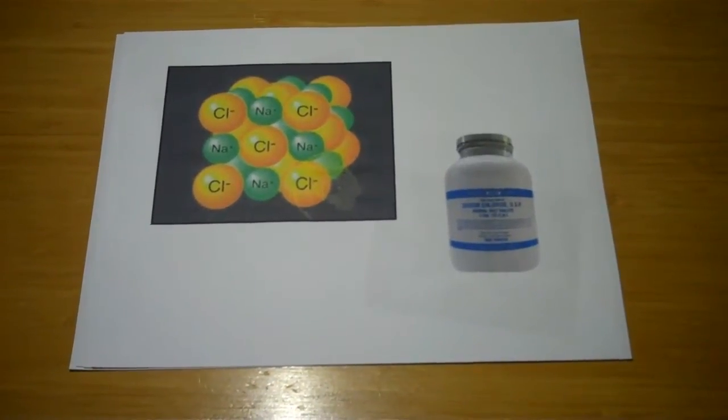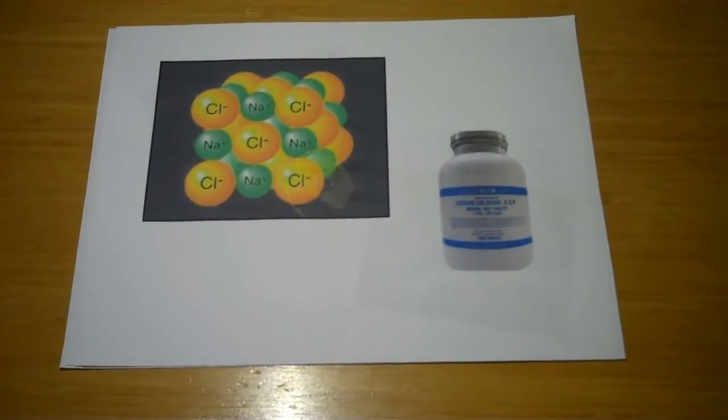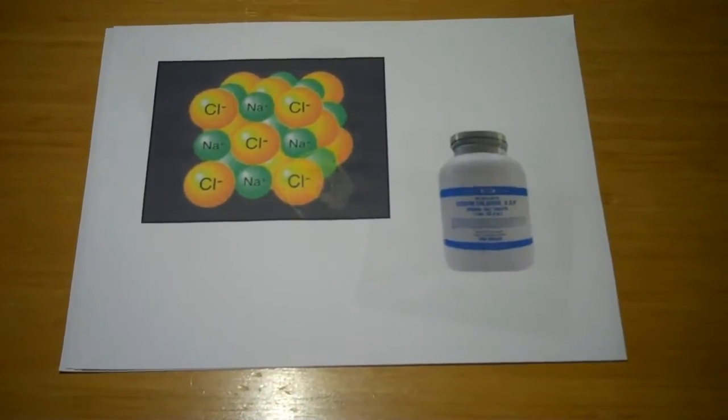Sodium Chloride has a boiling point of 1465 degrees Celsius and a melting point of 800.8 degrees Celsius.